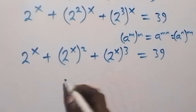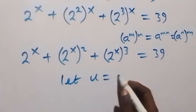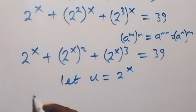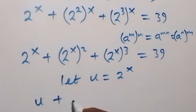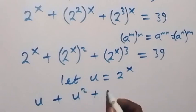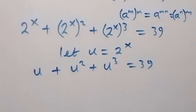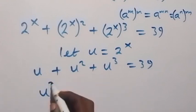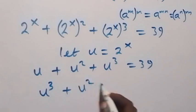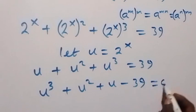So letting u equal 2 raised to power x, this becomes u plus u squared plus u cubed equals 39. Bringing 39 to the left and rearranging, we have u cubed plus u squared plus u minus 39 equals 0.